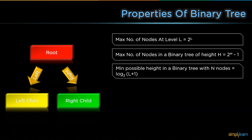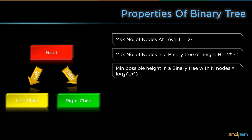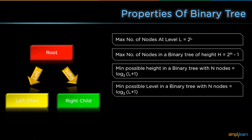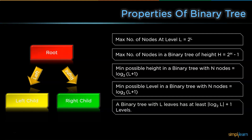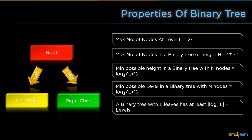The minimum possible height in a binary tree with n nodes is equal to log(n+1) base 2. The minimum possible level in a binary tree with n nodes is also log(n+1) base 2. Finally, a binary tree with l leaves has at least log(l) base 2 plus 1 levels.